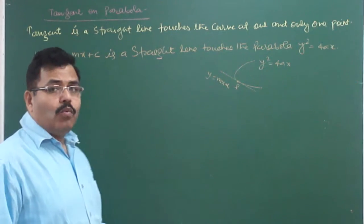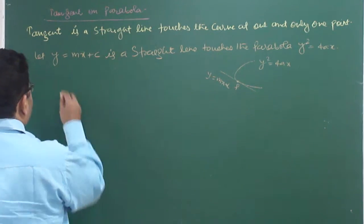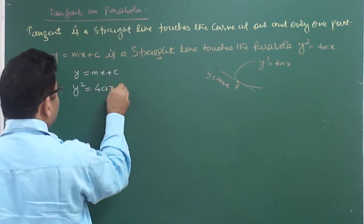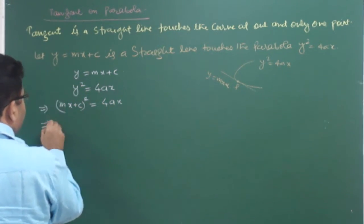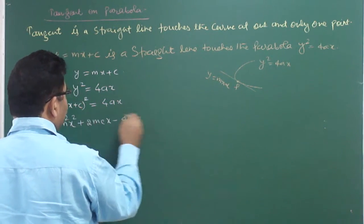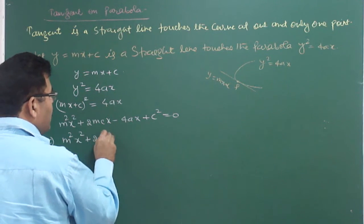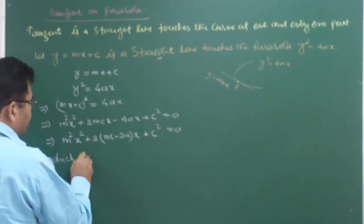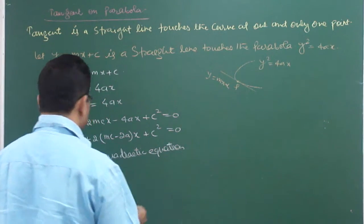Since the parabola touches the line at one and only one point, there must be only one common point. Solving these two equations — substituting y = mx + c into y² = 4ax — we get m²x² + 2mcx - 4x + c² = 0, which simplifies to m²x² + (2mc - 2a)x + c² = 0. This is a quadratic equation in x.